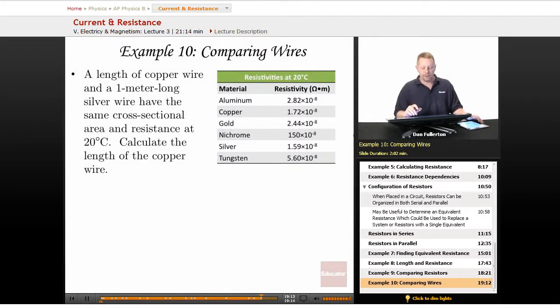Let's take a look at one more here. We're going to compare some wires again. A length of copper wire and a 1 meter long silver wire have the same cross sectional area and resistance at 20 degrees C. Calculate the length of the copper wire.